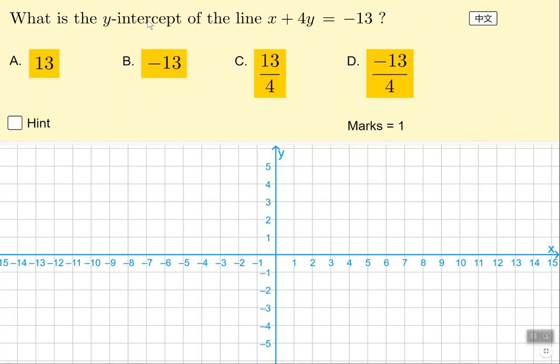So y-intercept: x is 0. When you think about it, you want to divide by the number in front of y. So y-intercept: divide -13 by 4.